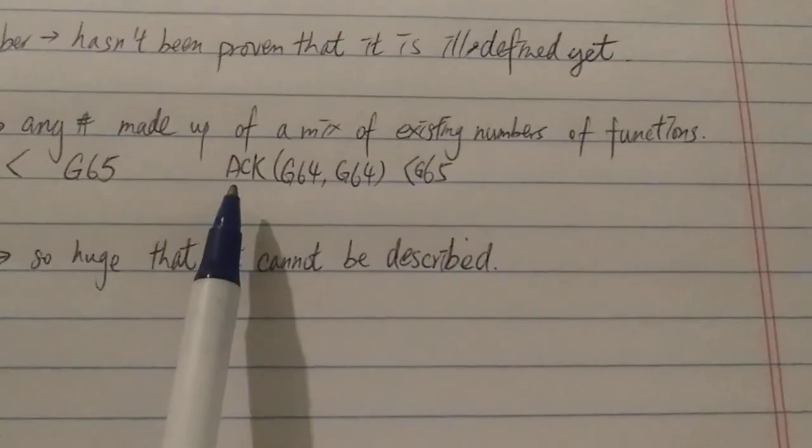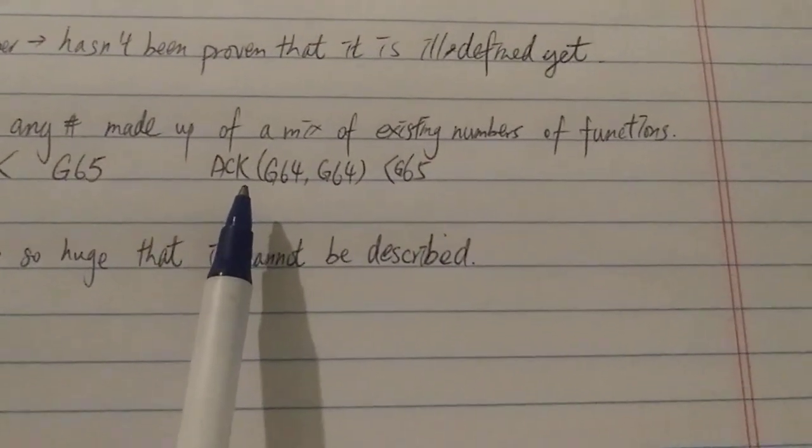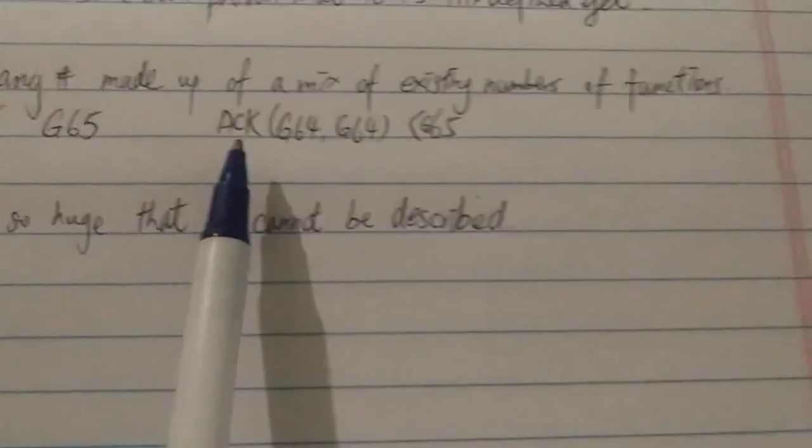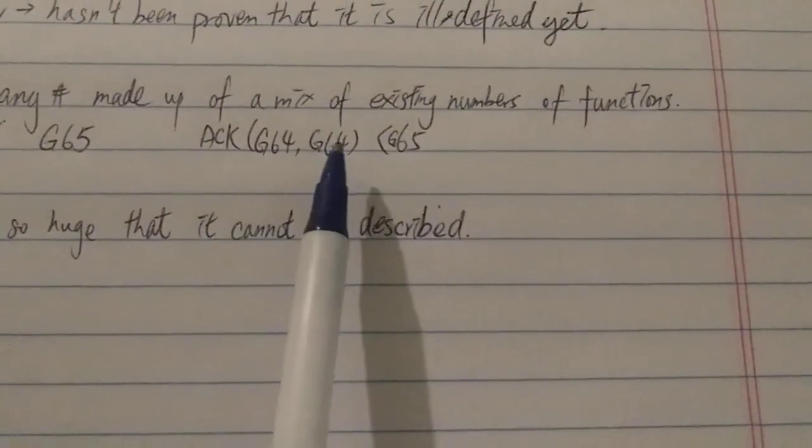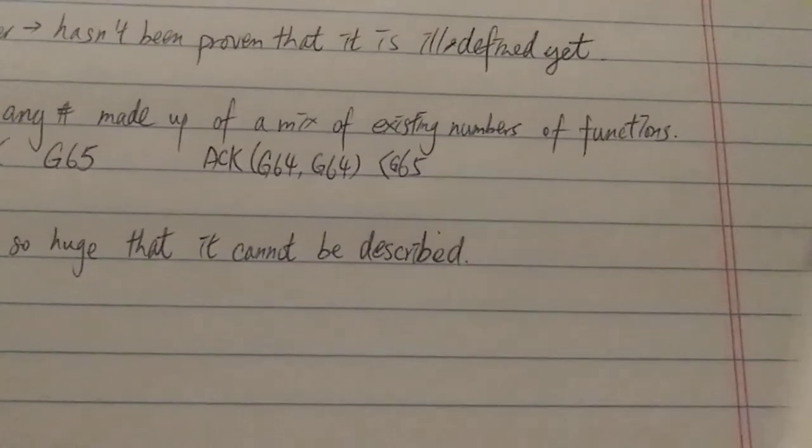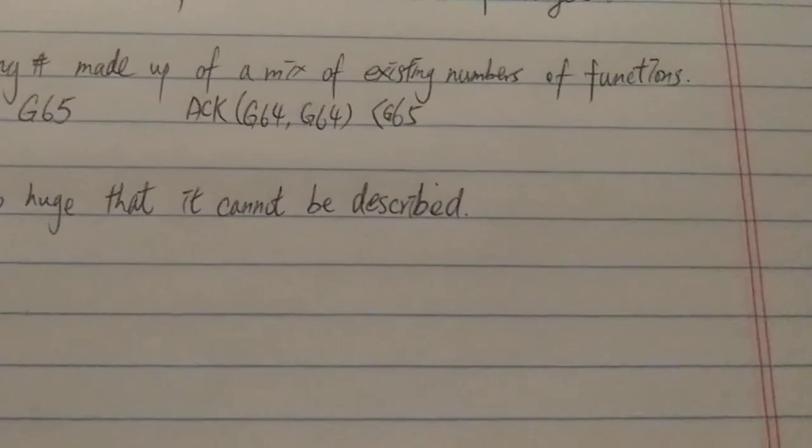We know that G64 factorial is actually much smaller than G65. Another good example would be the Ackermann. Ackermann here stands for the Ackermann function. Here it is Ackermann G64, G64. Most people would think it's very, very big.